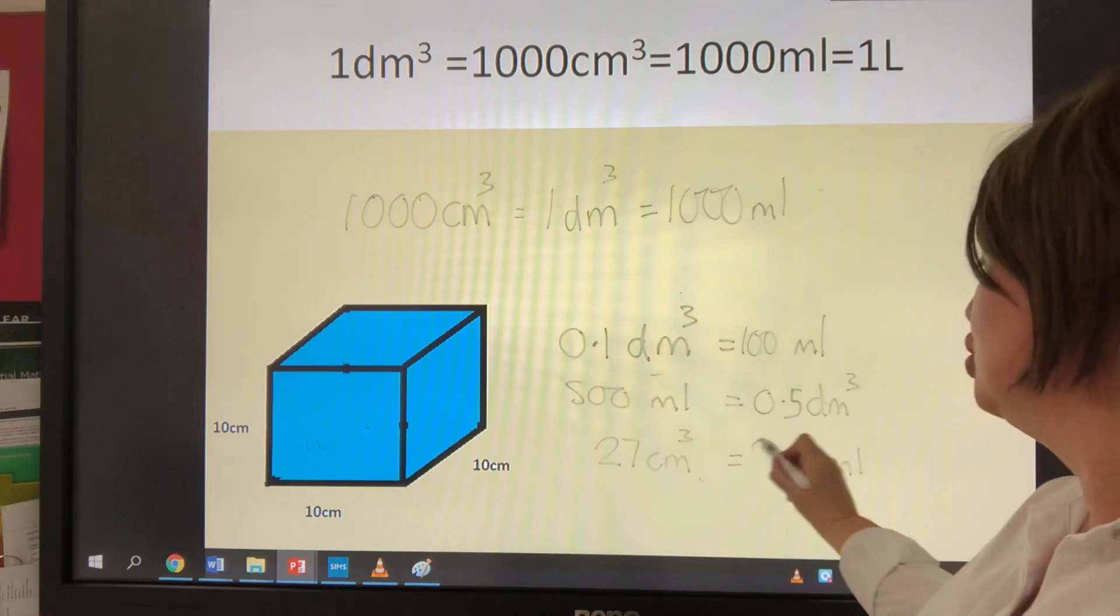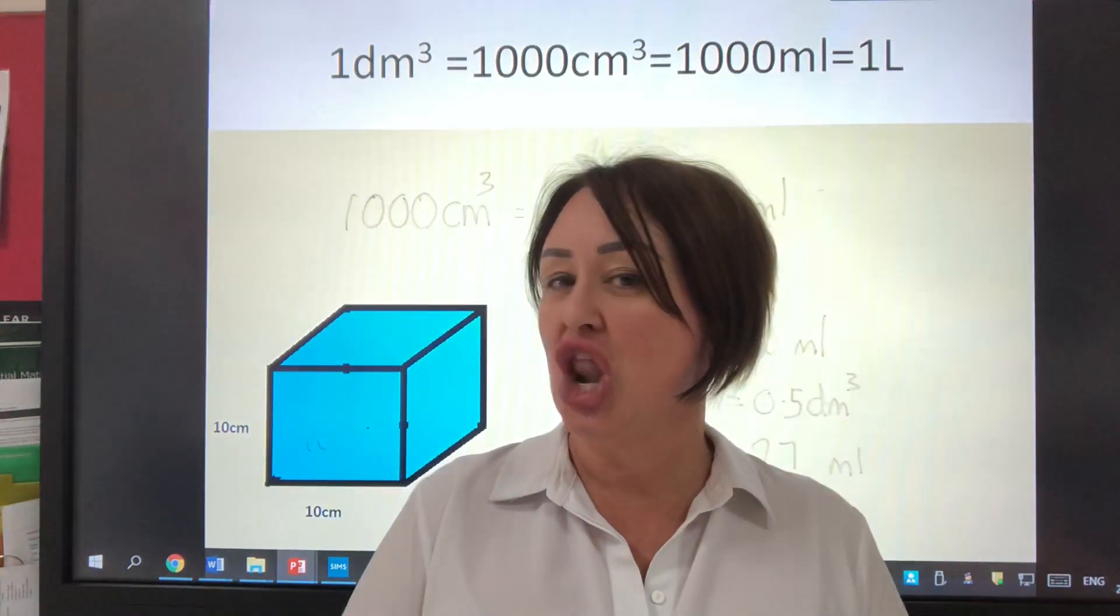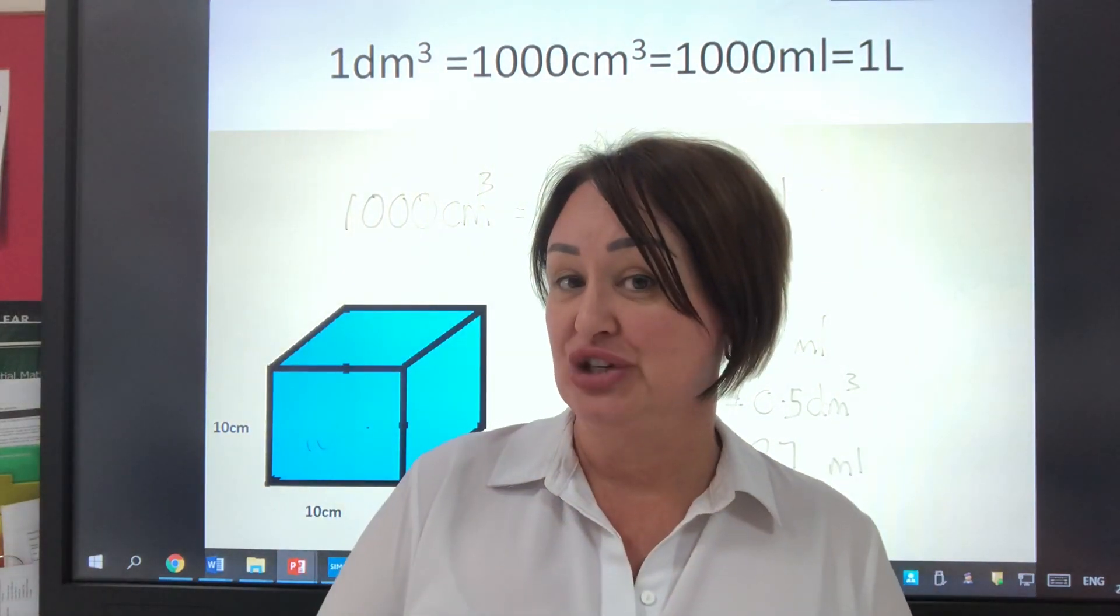And we've got 27 centimetres cubed as millilitres. It would be 27 millilitres. Same, same. I hope that makes sense, and I look forward to seeing lots of unit conversions in your serial dilutions.